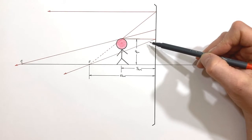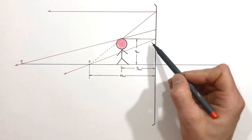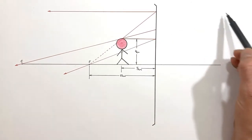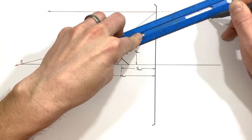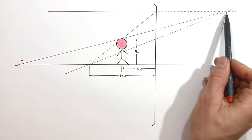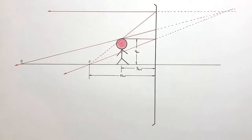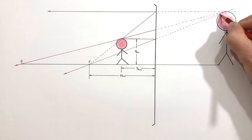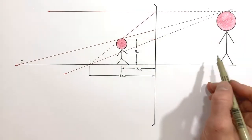In looking at these three reflected rays, it appears as though the three rays never converge and therefore an image is not formed — but that's not true. If we backtrack each of these rays to the other side of this mirror, we'll find they do converge somewhere back there, and this point where the rays converge is where our image will form.